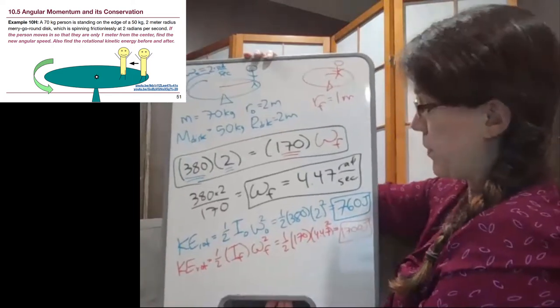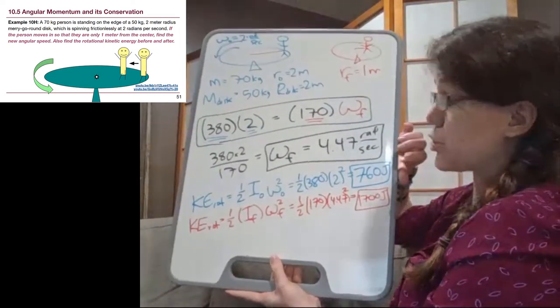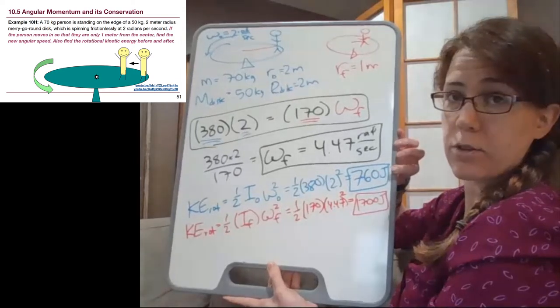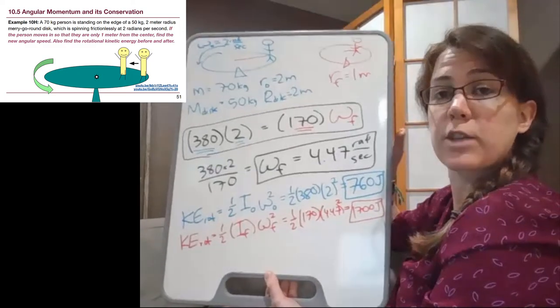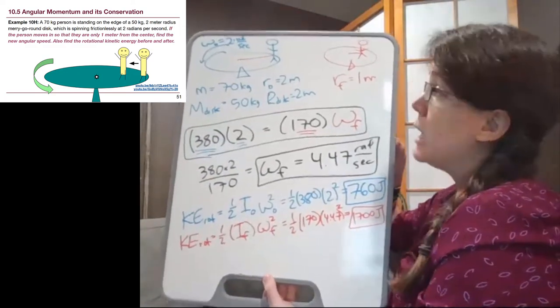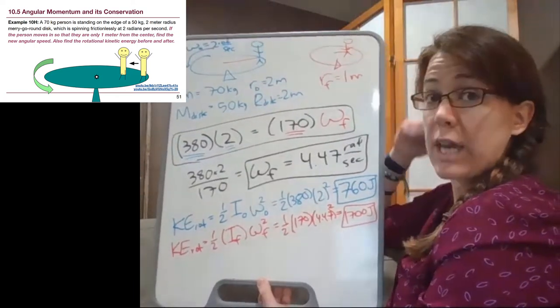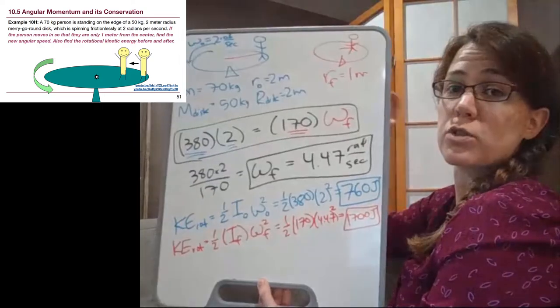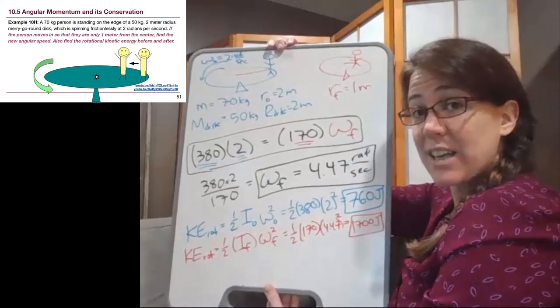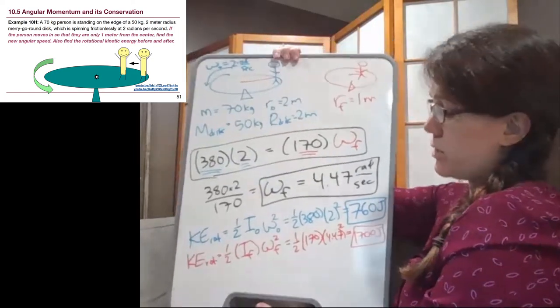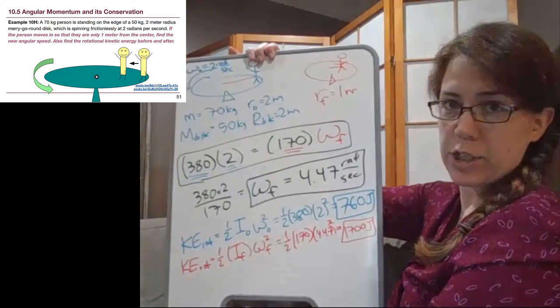Now look at this situation here. We can't have used energy conservation because the trackable energy we have here, the kinetic energy of rotation, is not conserved. Where did all of that extra energy come from? If we think about this person, it took some effort. It took a work term for them to use their muscles to move inwards towards the center of this disc, which means they added energy to the system. They took the energy of the breakfast they had that morning and they turned it into kinetic energy of rotation.